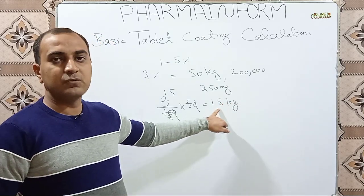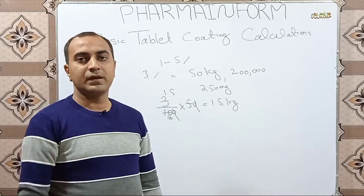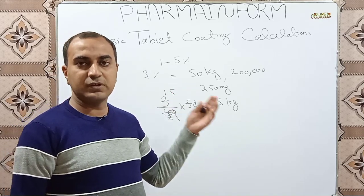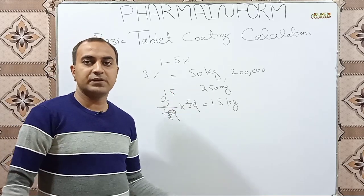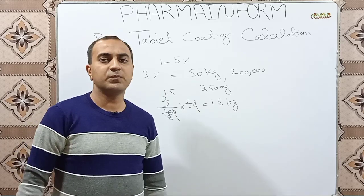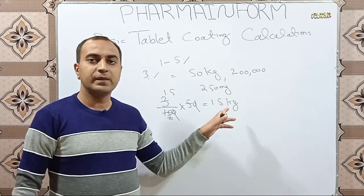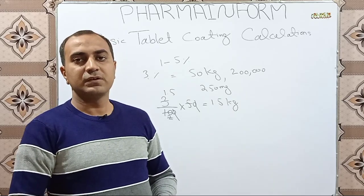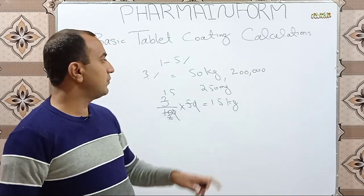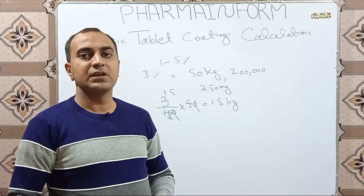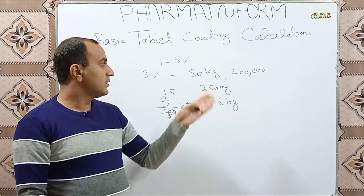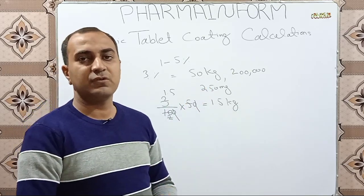This quantity will include all components except the solvent. It will contain film formers, opaquants, colorants, plasticizers, and so on, depending upon your formulation. This quantity will not include the solvents. So 1.5 kg coating material is required for a 50 kg batch size with 3 percent coating material.